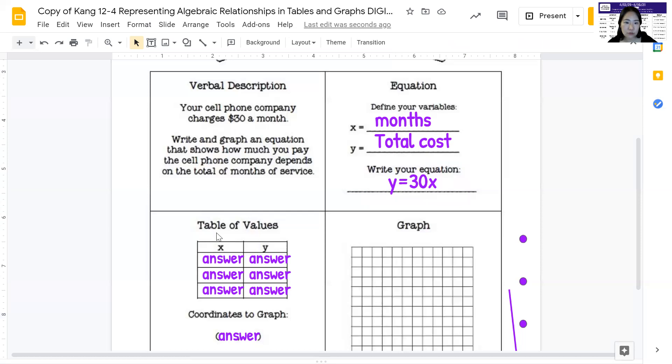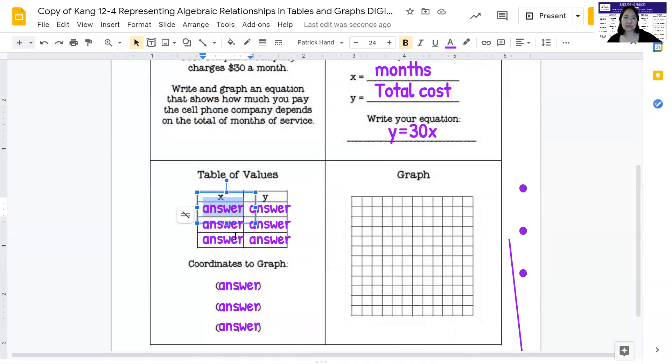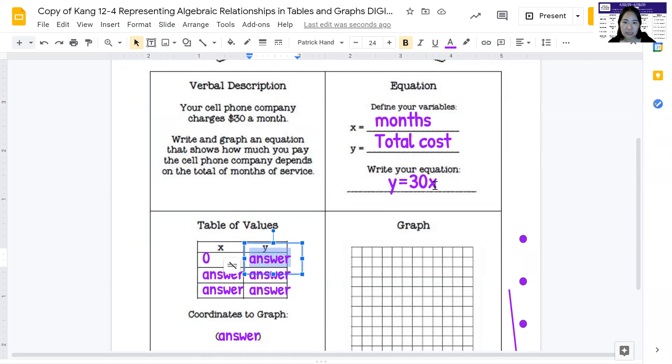Now, you could have gotten this equation from this wording here, or you could have just first do the table and then look at the pattern and write the equation that way. So now I'm going to find some of my X and Y values. So I'm going to first start with, and see how I chose the middle number. I'm going to do when X is, well actually, let me do when X is zero month. What would Y be? So if you're not renting for any month, so when X is zero, 30 times zero is zero. So the total cost is going to be zero. And doesn't that make sense? You're not renting for any month at all. So they should charge you zero amount.